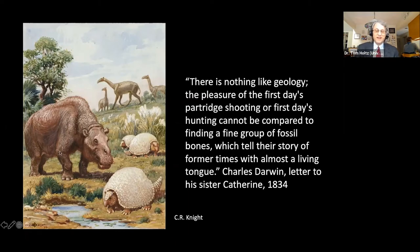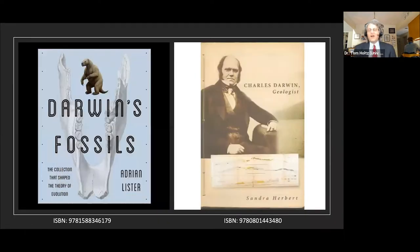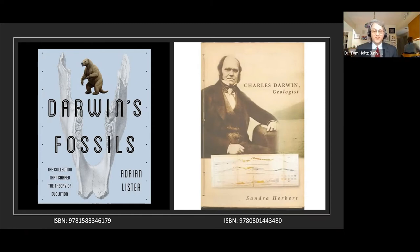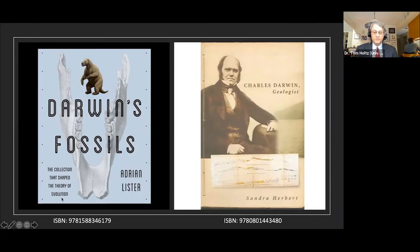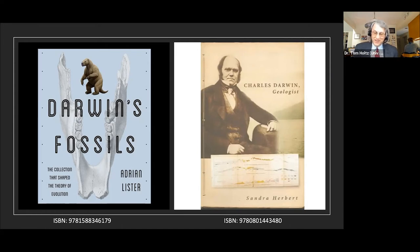Here's a Charles Knight painting with Macrauchenia, Toxodon, and Glyptodon — some of Darwin's great discoveries — together. I want to point out I am not a historian of science and have relied on others' work here. I want to throw out two recent books of interest: Adrian Lister's Darwin's Fossils: The Collection That Shaped the Theory of Evolution, and Sandra Herbert's Charles Darwin, Geologist — books that talk about this side of Darwin that we don't hear about as much.